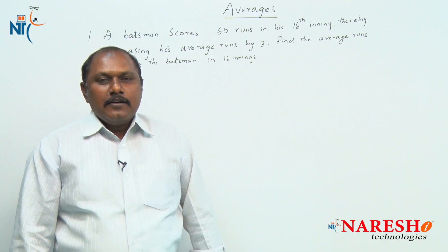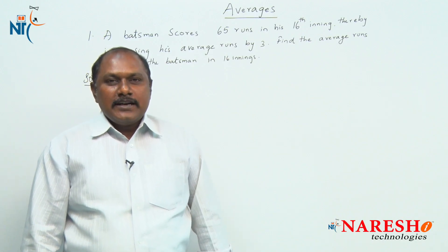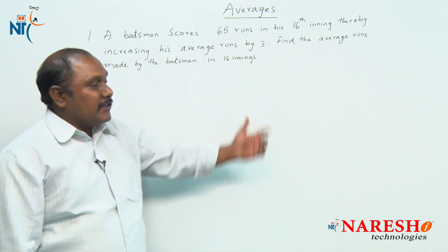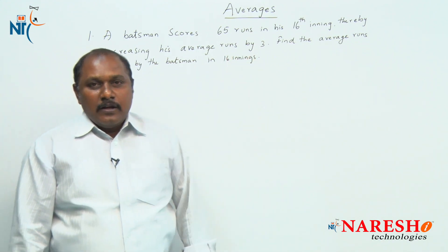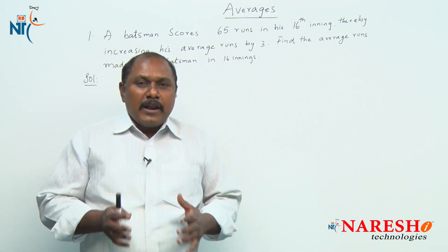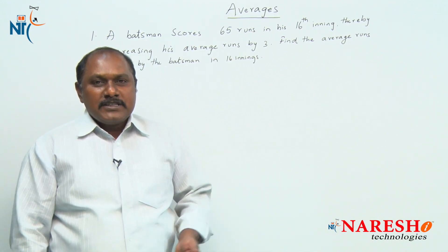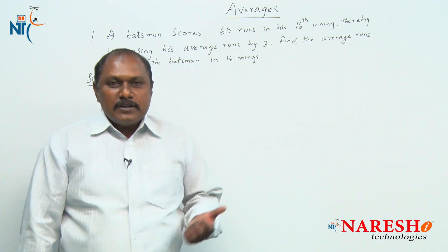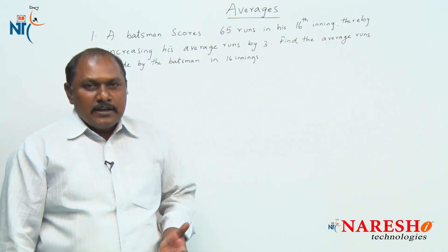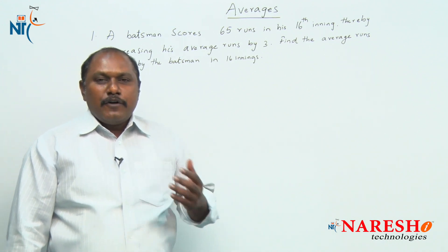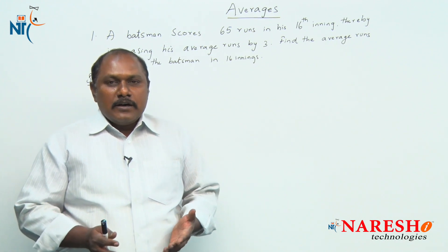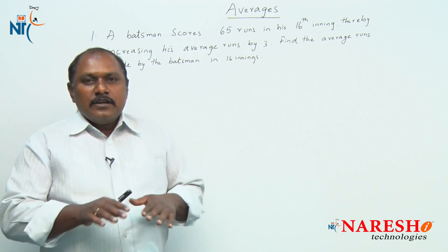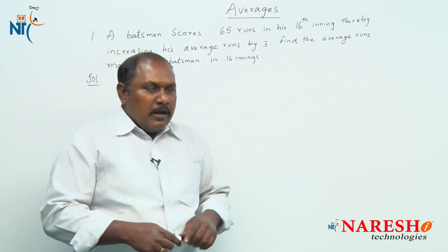Hi friends, welcome to Naresh Technologies. Welcome to the second session on the topic averages. The formula for average, as we have learned in the previous session: average is sum of observations by number of observations. And without formula, what do we mean by average? Average is uniform distribution.